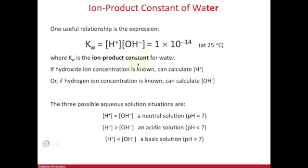It's called the ion product constant of water, which is this value 1 times 10 to the minus 14, or just 10 to the minus 14. When you multiply the concentration of hydrogen and hydroxide, those two together always equal 10 to the minus 14.